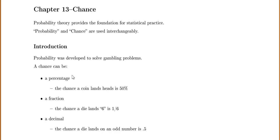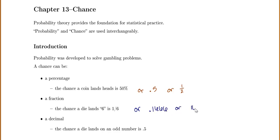The chance that a coin lands heads is 50%, which is also the same as 0.5 or one half. The chance that a die lands on a 6 is 1/6, or as a decimal 0.1666, or as a percentage 16.66%. The chance that a die lands on an odd number is 0.5, or one half, or 50%.